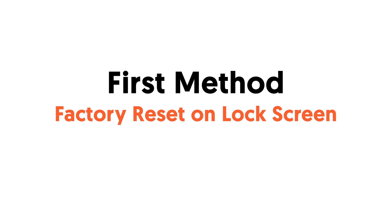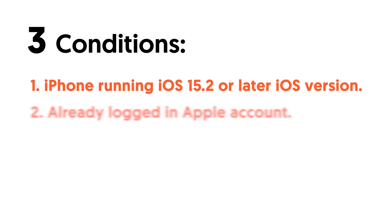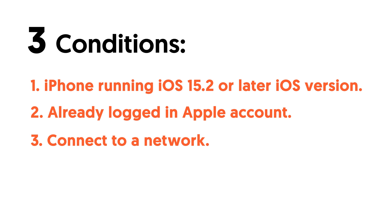First method: you can factory reset your iPhone on the locked screen. Factory resetting iPhone on the locked screen requires some conditions. First, your iPhone needs to be running iOS 15.2 or a later iOS version. Second, you have logged in with an Apple ID on your iPhone. Third, your iPhone needs to be connected to cellular data or Wi-Fi. If you qualify with the above conditions, then you can factory reset your iPhone easily.